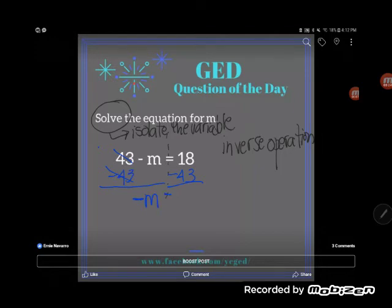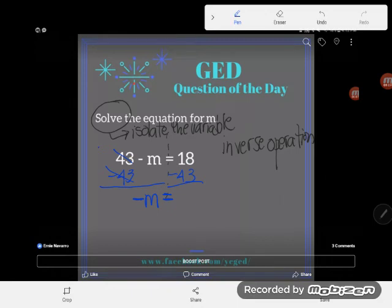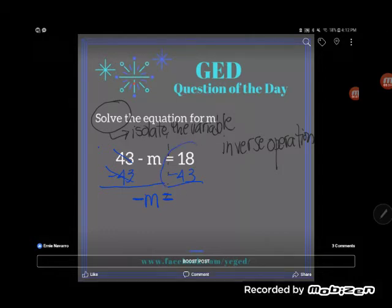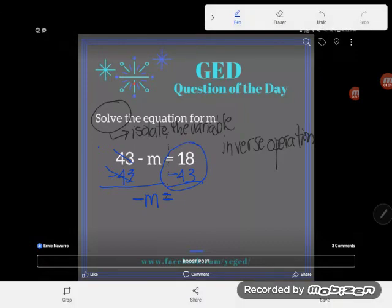So on this side, 43 subtract 43 really would zero out. This would all become zero, so I have nothing left on this side except for M. Now you might be saying, isn't it zero minus M? Yeah, but you and I ought to know by now that zero doesn't do squat, so that is the same as minus M.